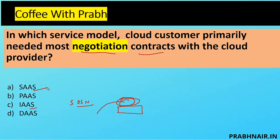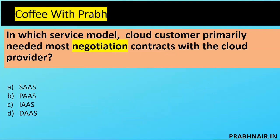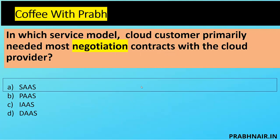In SaaS, we are just consuming their application as per the subscription. The only thing I'm responsible for in SaaS is our data security and compliance — the rest is managed by the vendor. We get one interface, upload and download data, but have no visibility into the back end. So we always need to negotiate with the cloud provider in SaaS because we have limited control. The answer is A — SaaS.